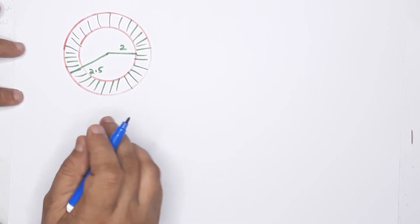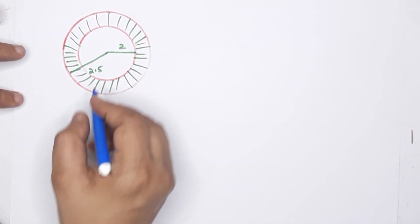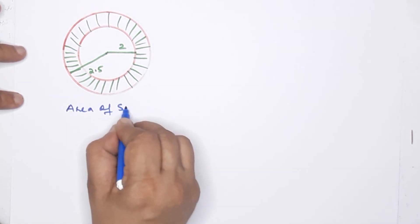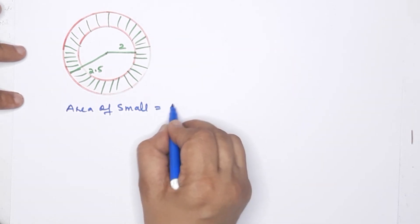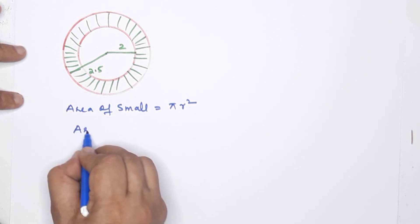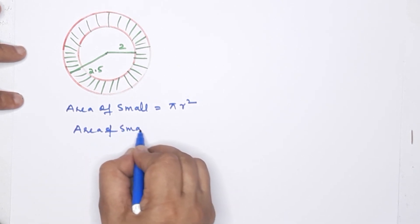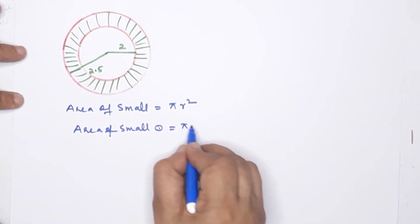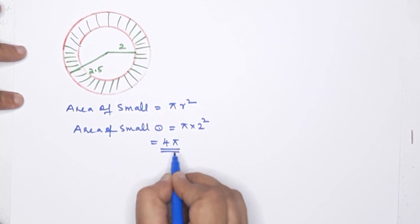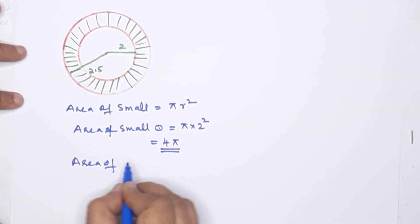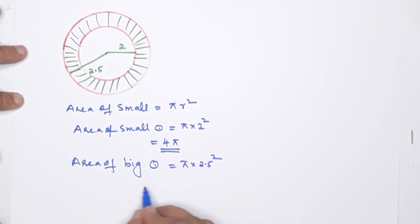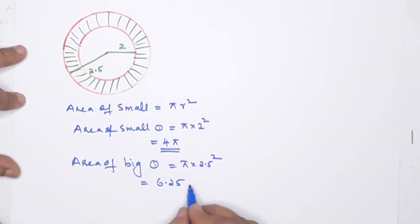We find the area of the ring. Area of small circle = πr² = π × 2² = 4π. Area of big circle = π × 2.5² = 6.25π.